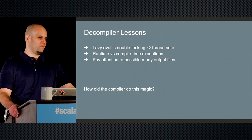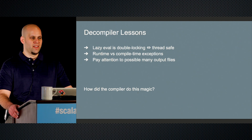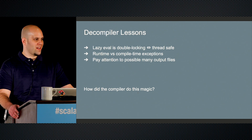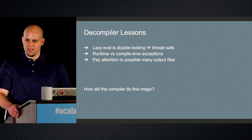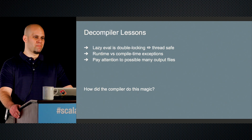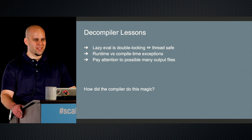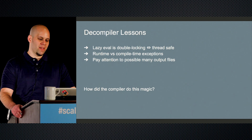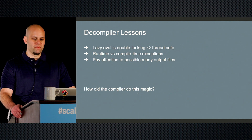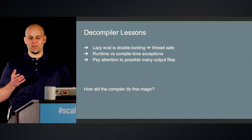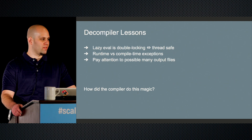The lessons from doing decompilation on .class files would be: lazy eval is thread safe — it's a great feature and you should use it. Knowing that runtime versus compile-time exceptions are very important — I would advocate for compile-time checks more than runtime checks. Also, pay attention to all the different output files. When you do companion objects or nested multiple classes in the same file, you're going to generate a lot of namespace, and knowing how that gets executed at runtime is an important consideration.